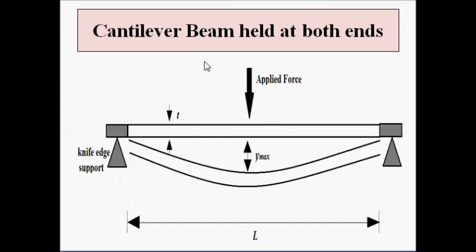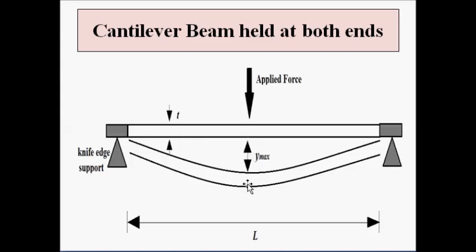The second configuration has both ends of the cantilever beam fixed, and the force is applied in the middle. As a result, the middle portion undergoes deformation or bending. The beam also has a length L, thickness T, and breadth B, and the mechanical displacement is measured from the middle, with a maximum displacement of Y_max.